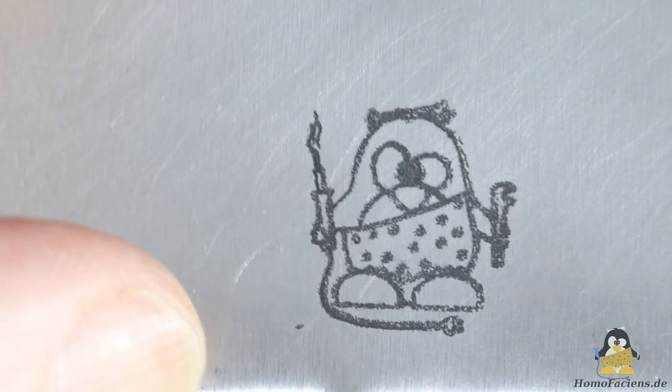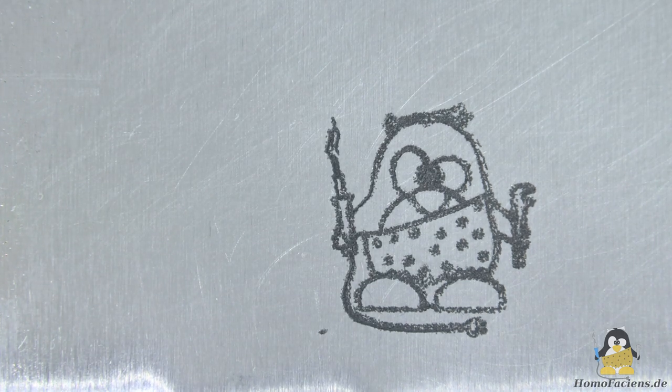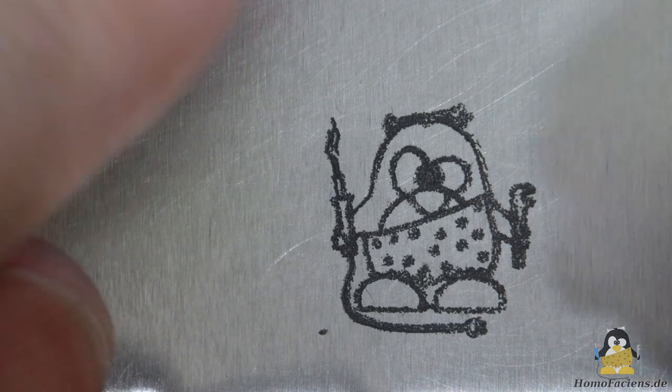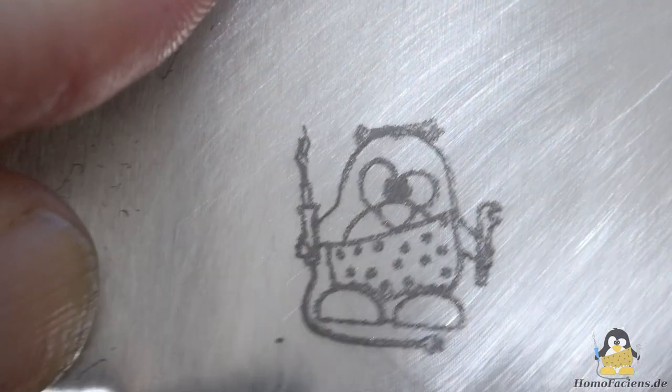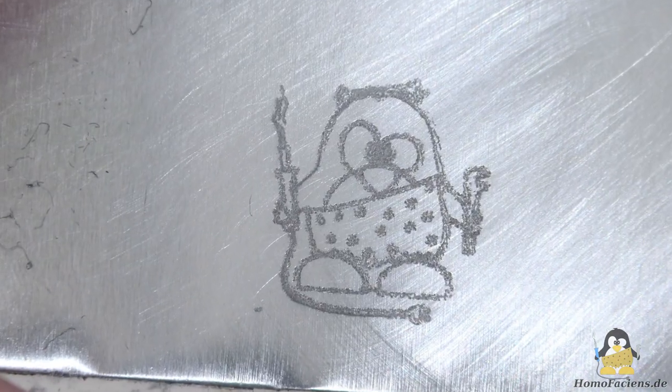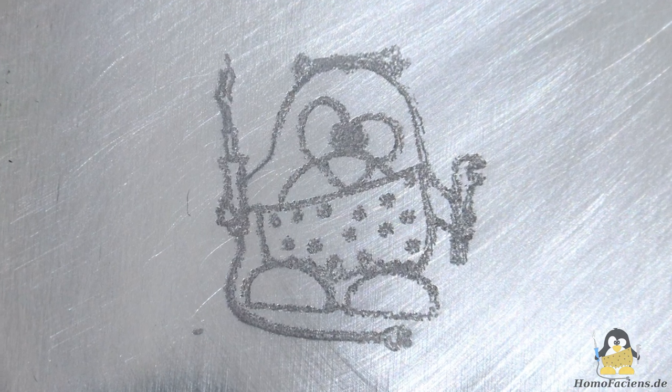The result is clearly visible. The black oxide lines adhere quite well to the aluminum, so that they cannot be rubbed off with a towel. However, steel wool removes the black oxide from the soft metal. But even after that the engraving remains visible, although not quite as well.